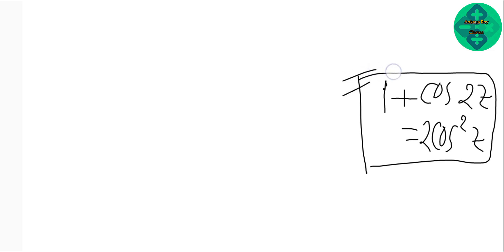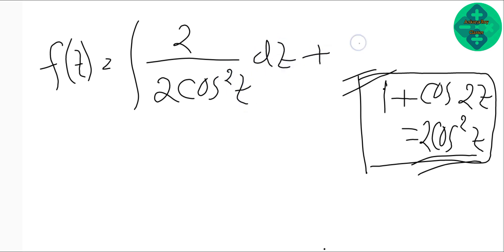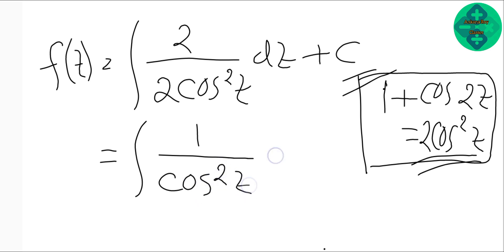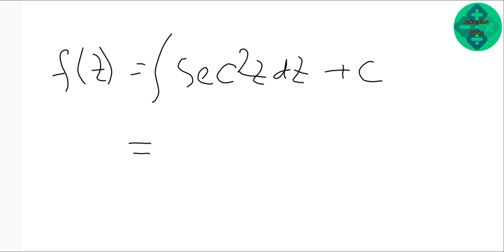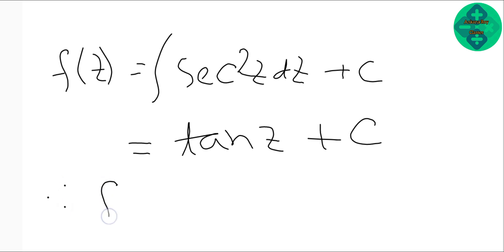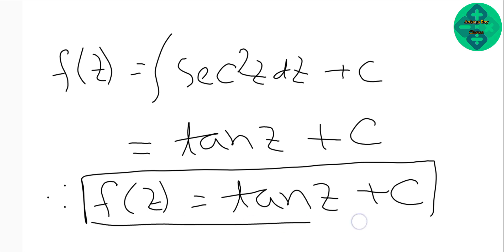We know that 1 plus cos(2z) is equal to 2·cos²(z). Therefore f(z) equals the integral of 2 divided by 2·cos²(z) dz plus c, which equals the integral of 1 divided by cos²(z) dz plus c, equals the integral of sec²(z) dz plus c. We know that the integral of sec²(z) is tan(z), therefore f(z) equals tan(z) plus c. This is the required answer.